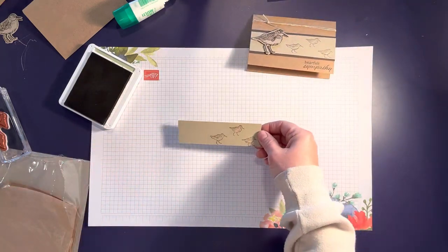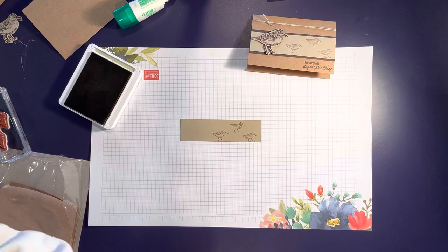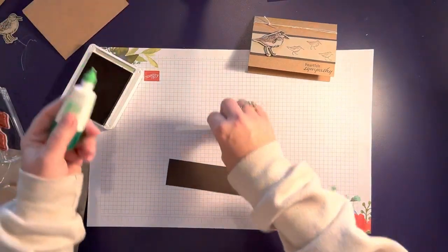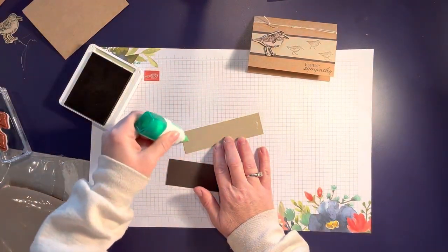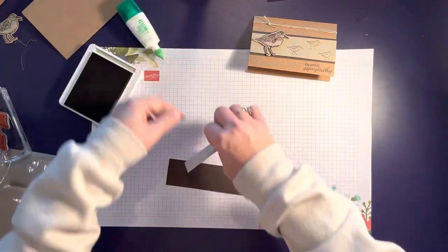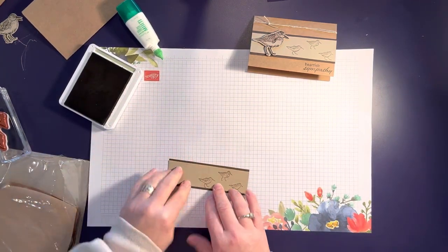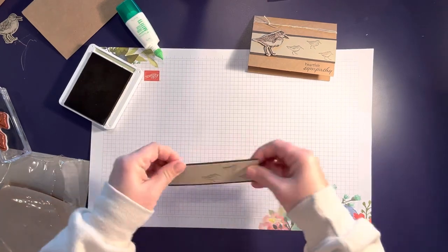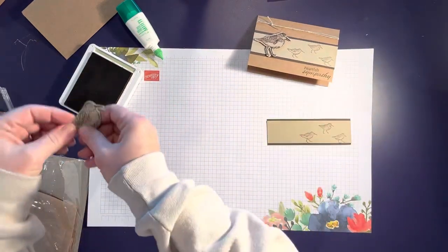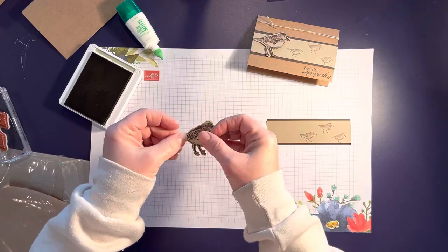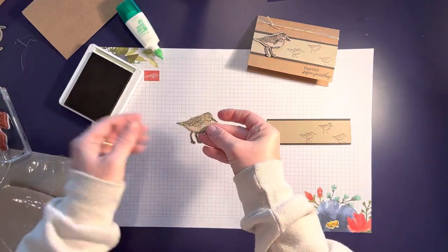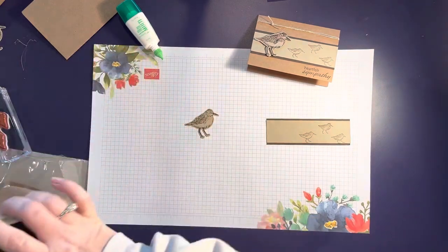I stamped that towards the side and then I'm going to put a little glue on here. Ahead of time I stamped the bird using early espresso and I die cut it just so I don't have to do that now.